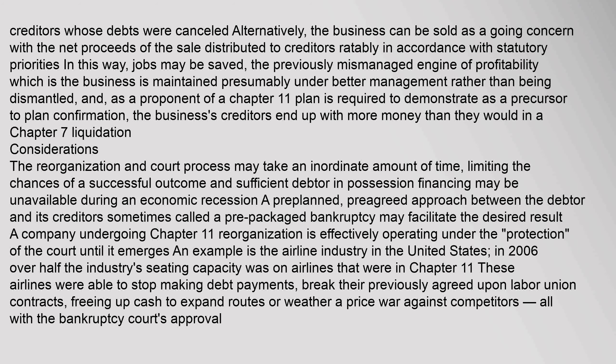Alternatively, the business can be sold as a going concern with the net proceeds distributed to creditors ratably in accordance with statutory priorities. In this way, jobs may be saved, and the business is maintained presumably under better management rather than being dismantled. As a proponent of a Chapter 11 plan is required to demonstrate, the business's creditors end up with more money than they would in a Chapter 7 liquidation. The reorganization and court process may take an inordinate amount of time, limiting the chances of a successful outcome, and sufficient debtor-in-possession financing may be unavailable during an economic recession.